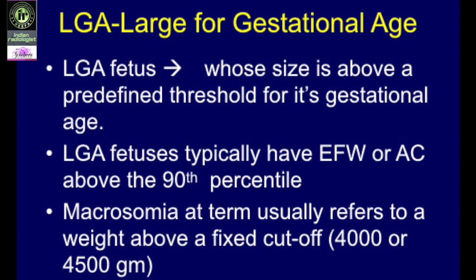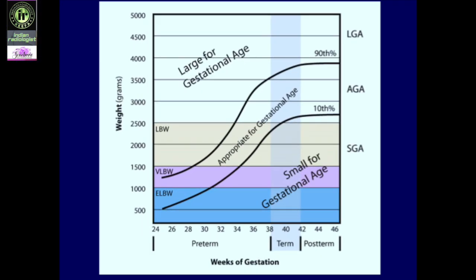Macrosomia at term usually refers to a weight above a fixed cutoff — usually 4000 grams, or more than 4500 grams in some countries or studies. So if you see a fetus who at 32 weeks weighs around 3.4 kg, which is around the 95th percentile, you would call it an LGA baby but not a macrosomic baby. It is always better to label them as LGA fetuses. AGA falls between the 10th and 90th centile, above 90th is LGA, and below 10th is SGA.